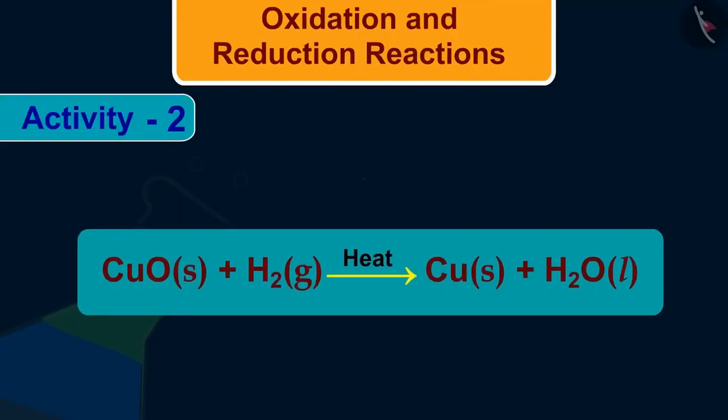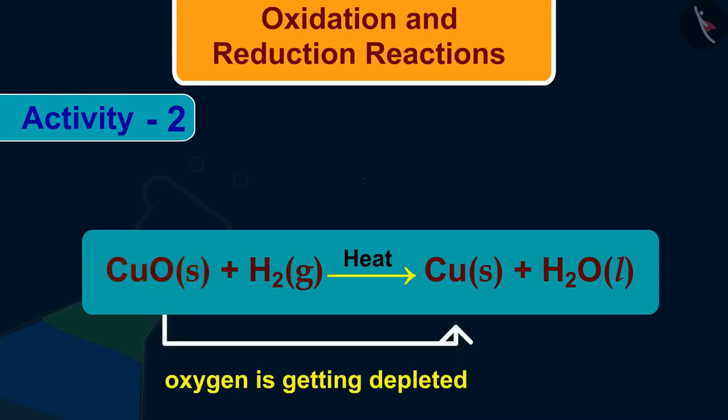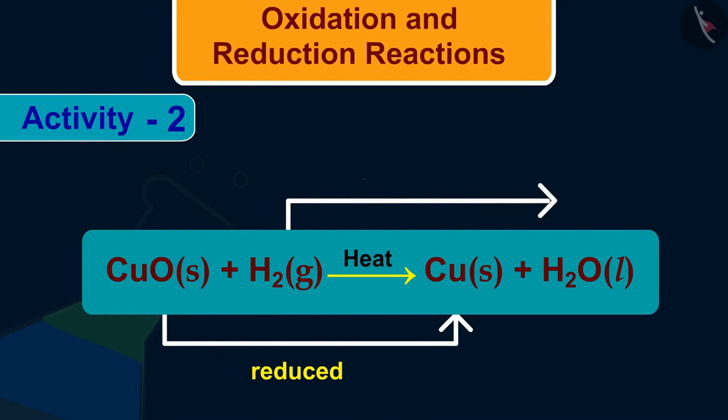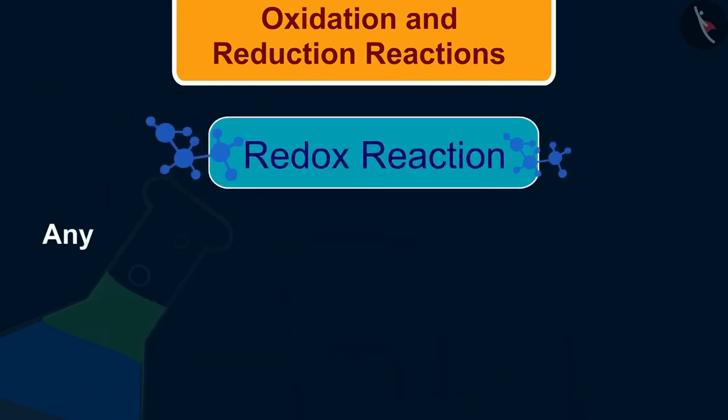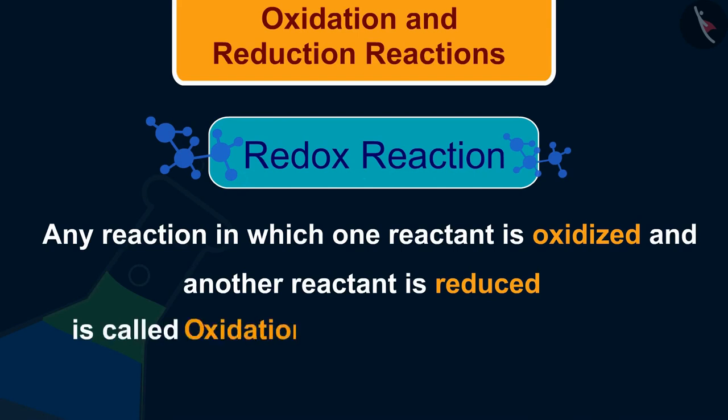If we look closely at this reaction, we will find that oxygen is getting depleted from copper oxide. Hence, it is reduced and oxygen is increasing in hydrogen. So, it is oxidized. Any reaction in which one reactant is oxidized and another reactant is reduced is called oxidation reduction or redox reaction.